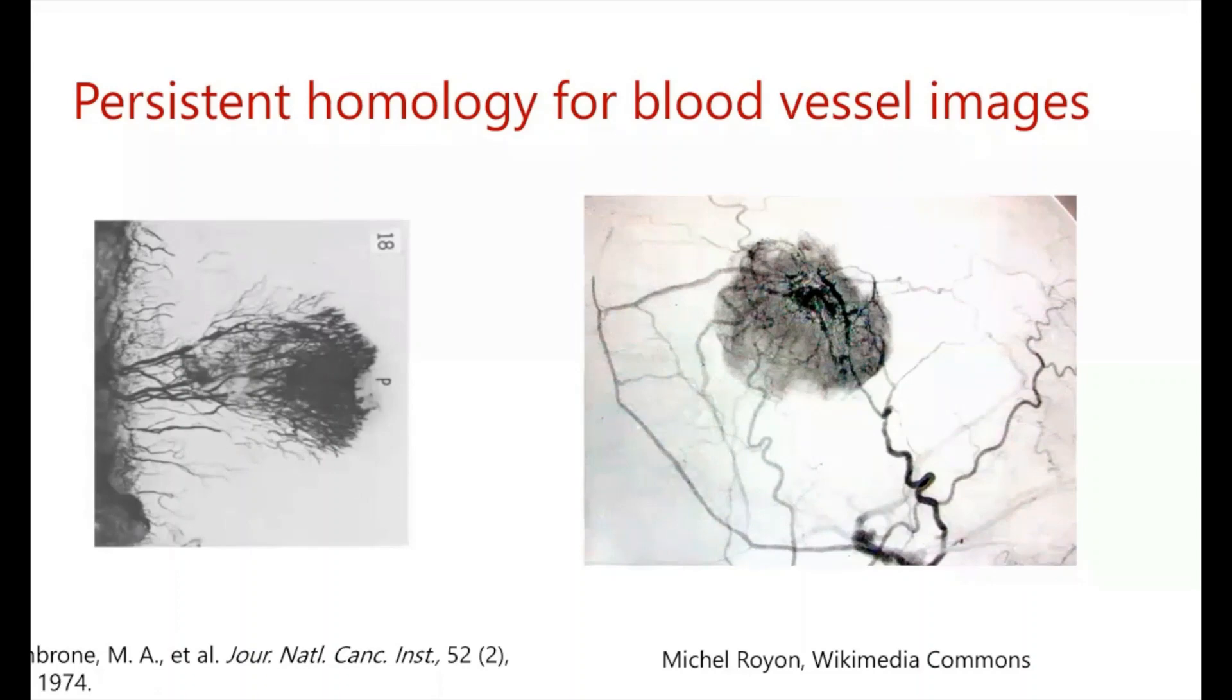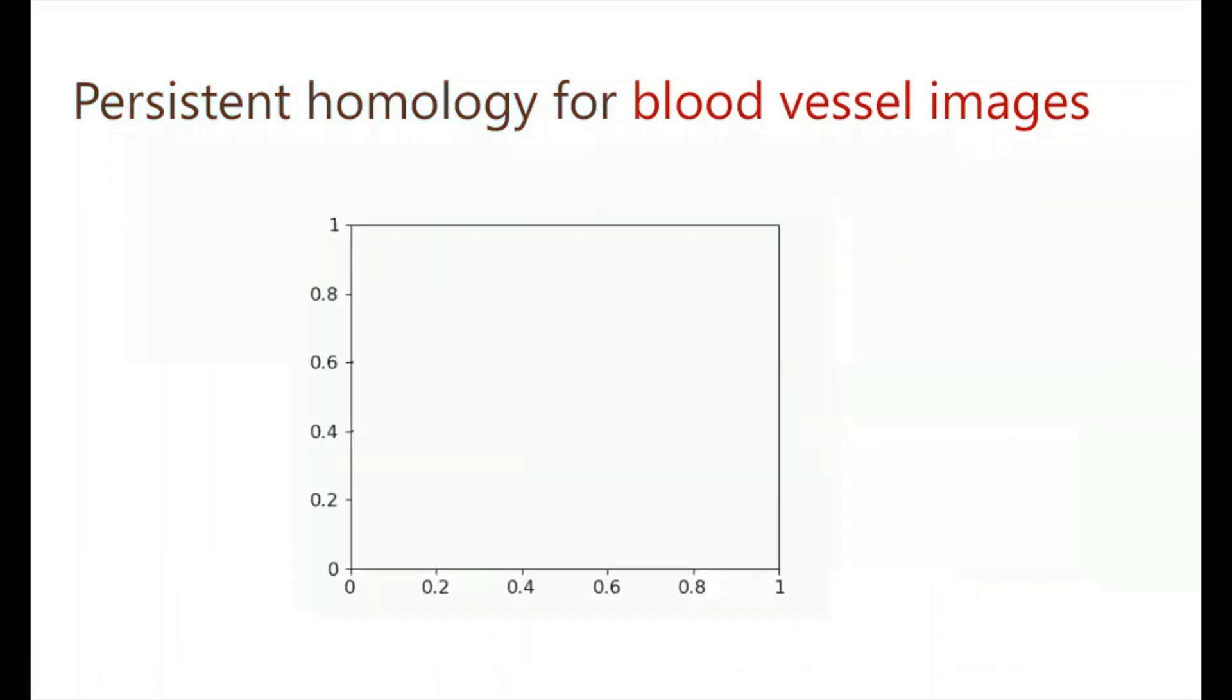So our goal for today is to talk about how persistent homology can be used to summarize these types of morphologies that we observe. Now we're going to keep things simple, and we're going to compute persistent homology for simulated mathematical models of blood vessels, and what a mathematical model looks like is as follows.